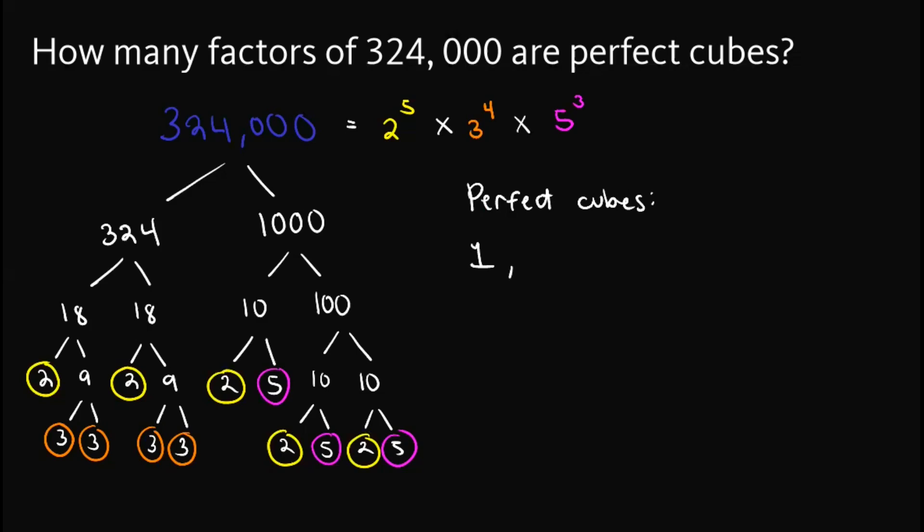Aside from that, we can obtain 2 cubed from 2 raised to 5, since 2 raised to 5 can be written as 2 cubed times 2 squared, so we can take the 2 cubed out here. We apply the same idea to the other prime factors. So we've got 3 cubed out here, and 5 cubed out here.